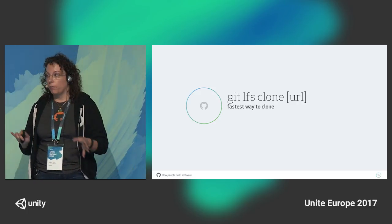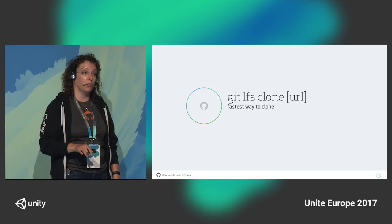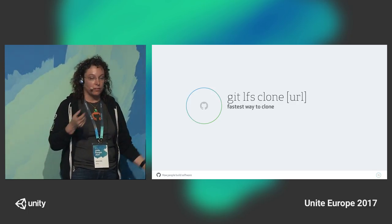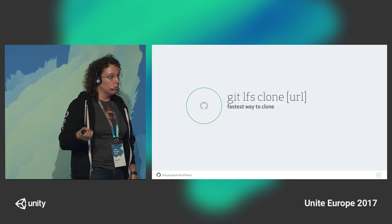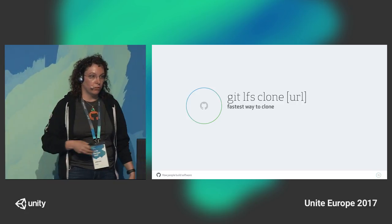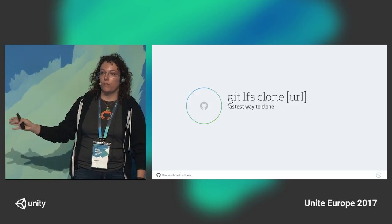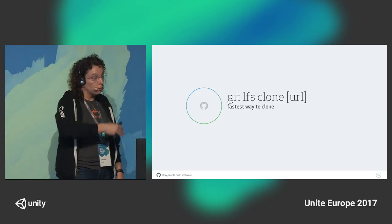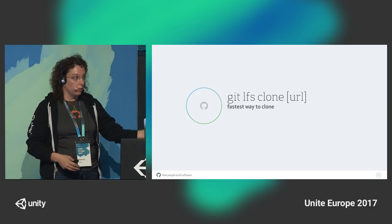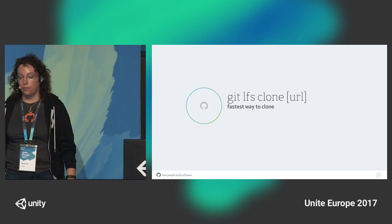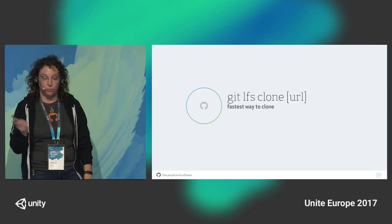Now you have Git on your system and your credentials — you can work. The fastest way to clone a repo, regardless of whether it has LFS or not, is to do 'git lfs clone'. We're not doing clone repository in GitHub for Unity yet — that's probably coming post 1.0 — but when we do, we'll use git lfs clone. It is easily 50% faster than a normal git clone, because it will download all the files in parallel instead of one by one.